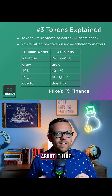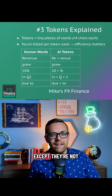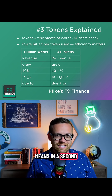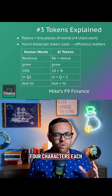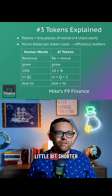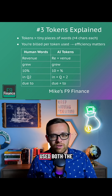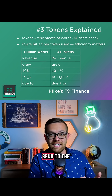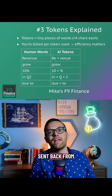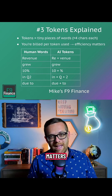You can think about it like syllables for the computer, except they're not always exactly syllables. There are approximately four characters each — they can be a little bit longer or a little bit shorter. You are billed per token used, both the tokens that you send to the large language models and for the tokens that are sent back. So efficiency really matters.